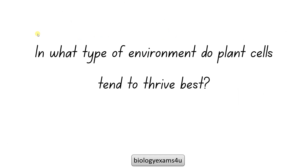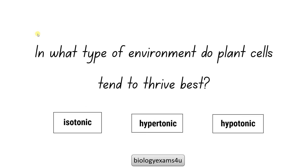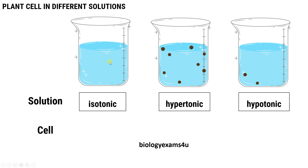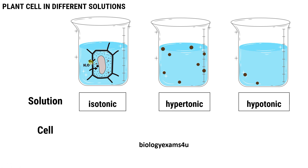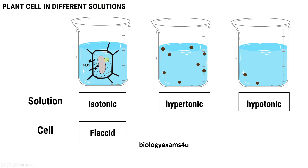In what type of environment do plant cells tend to thrive best? Is it isotonic, hypertonic, or hypotonic? Let's find out. We are going to place a plant cell first in an isotonic solution. As discussed, in an isotonic solution the solute concentration of the cell is the same as that of the external solution, so there won't be net movement of water. The cell remains at a state of low turgor pressure, which in the case of plant cells is called flaccid.